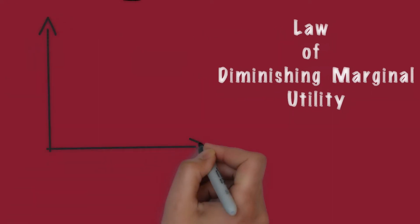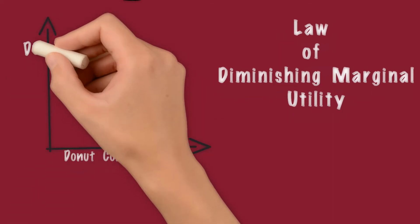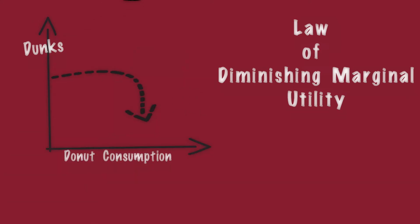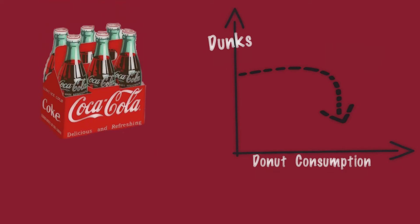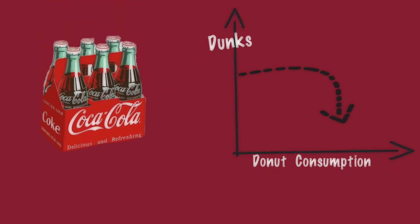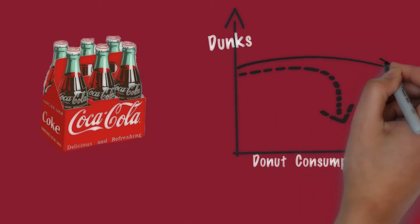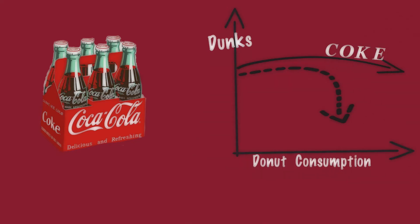The satisfaction from every additional unit of consumption — the marginal utility — goes on decreasing. In fact, anything that can be consumed by our five senses has this limitation. But there are some exceptions. For example, the flavor of Coca-Cola has been designed in such a manner that it leaves very little aftertaste in the mouth, which means that in spite of being sweet in taste, the marginal utility of Coke consumption does not diminish as rapidly as it should.